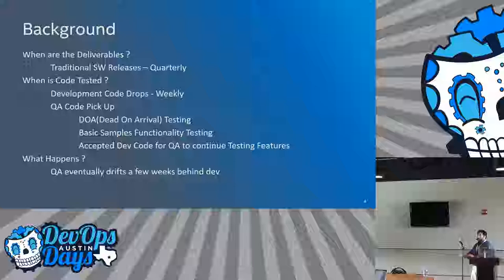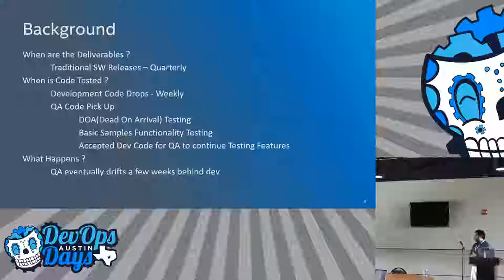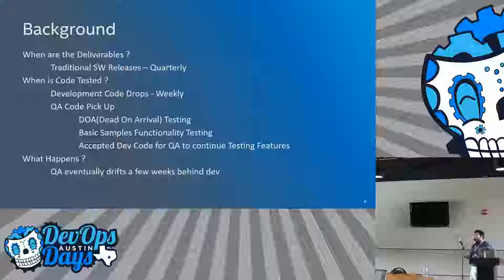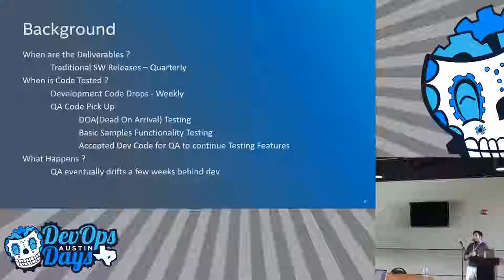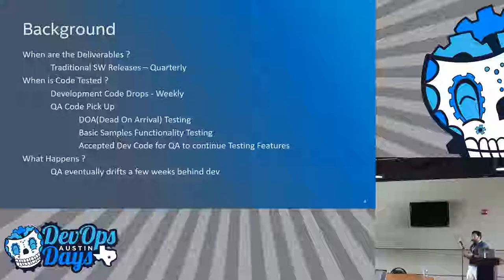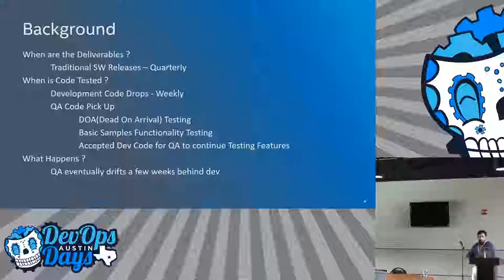I'm going to rush through the first few slides — they cover the basic principles of DevOps and why we went into it. Releases were quarterly, code development drops were weekly to QA. When they came in, we had dead-on-arrival testing because code just didn't come up, then basic functionality testing, and eventually QA would say we can take this set of repositories and work on developing our tests. QA runs a few weeks behind.